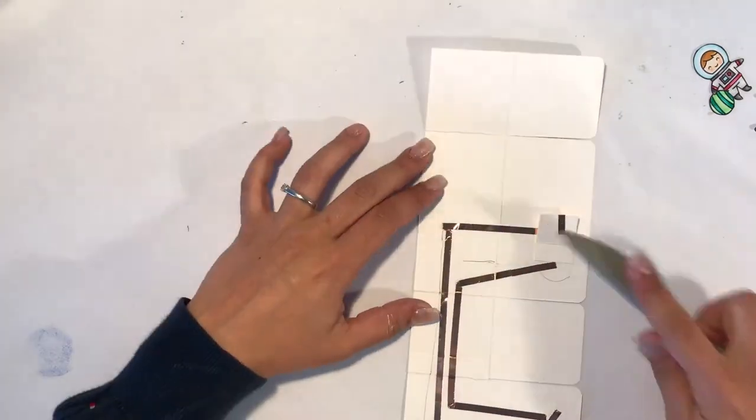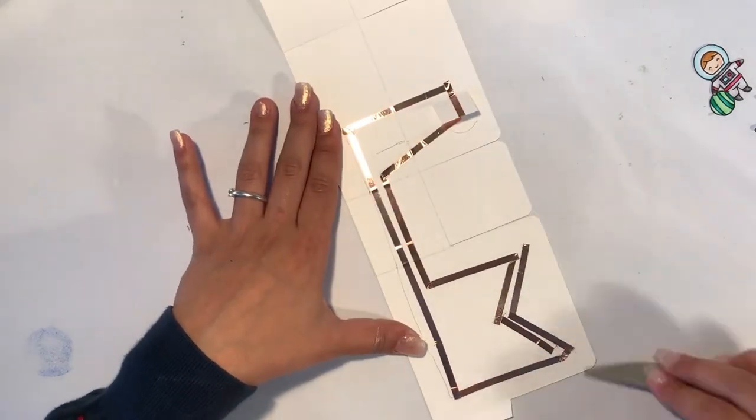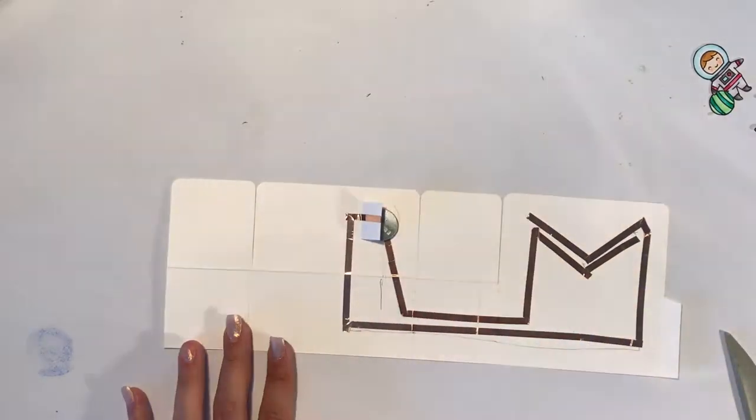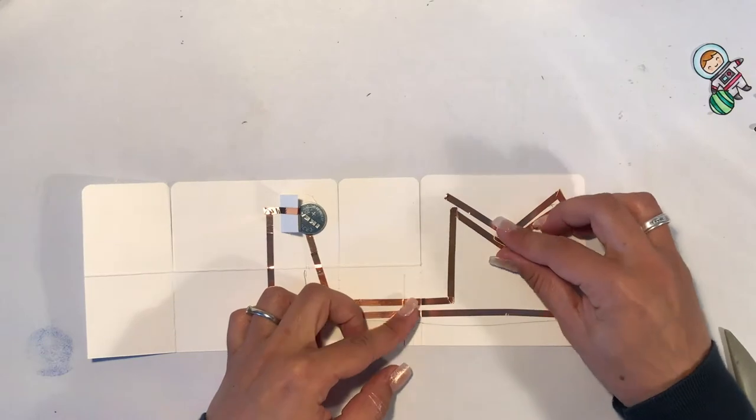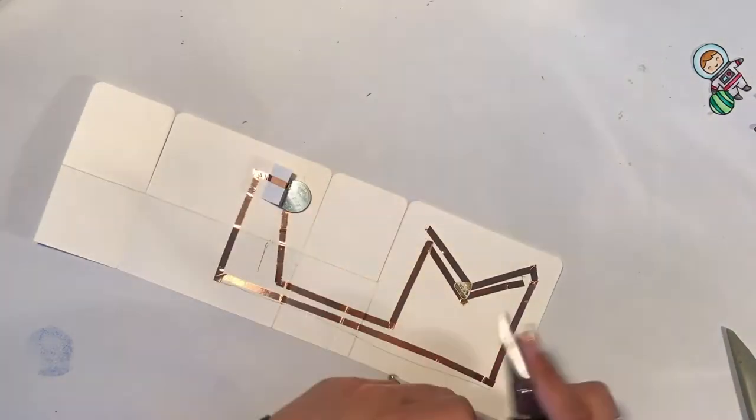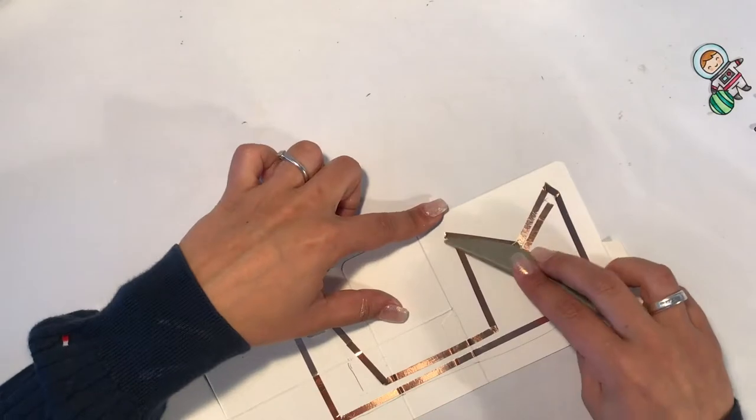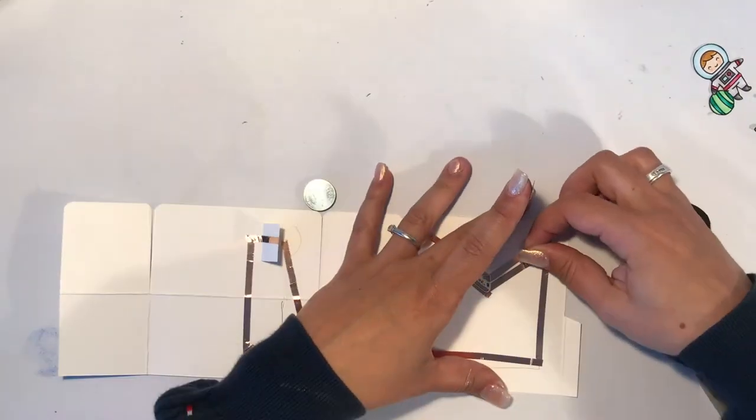This little flap of paper that you are seeing will later be my switch to get my lights on and off. After finishing the circuit we just have to apply our LEDs and with the LED lighting system this is the easiest part of this card.